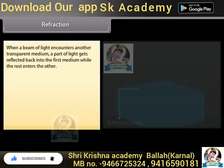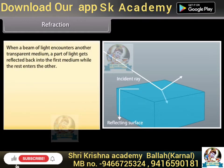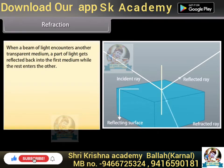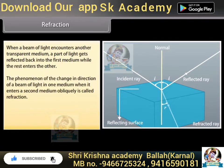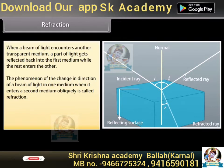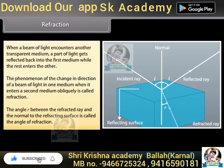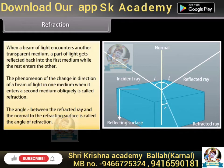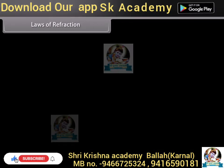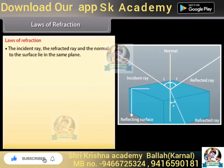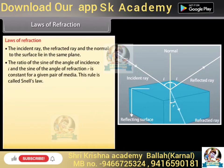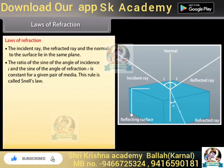Refraction: When a beam of light encounters another transparent medium, a part of light gets reflected back into the first medium while the rest enters the other. The phenomenon of the change in direction of a beam of light in one medium when it enters a second medium obliquely is called refraction. The angle R between the refracted ray and the normal to the refracting surface is called the angle of refraction. The laws of refraction state that the incident ray, the refracted ray, and the normal to the surface lie in the same plane.